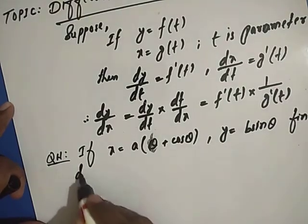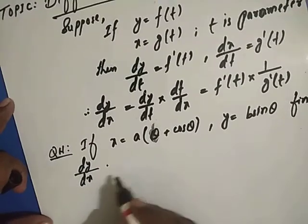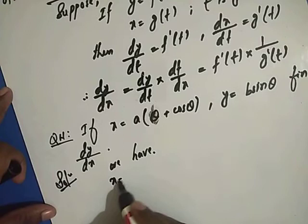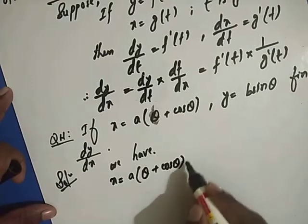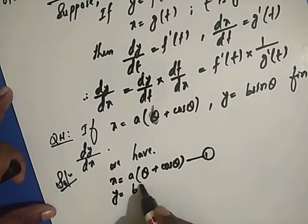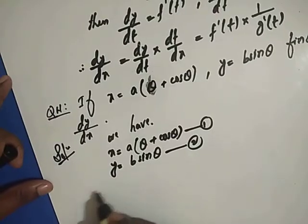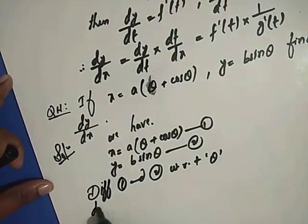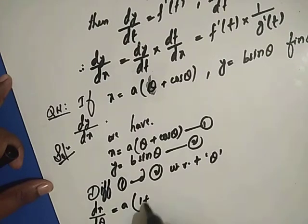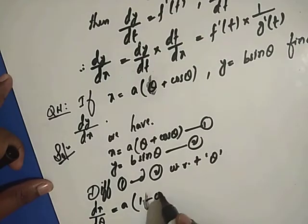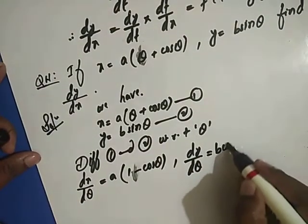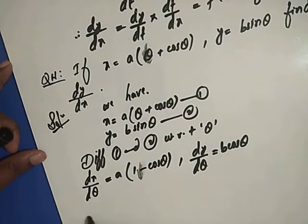Solution: We have x equals a(theta plus cos theta) and y equals b sin theta. Differentiating equations 1 and 2 with respect to theta: dx/d(theta) equals a times (1 minus sin theta), and dy/d(theta) equals b cos theta.